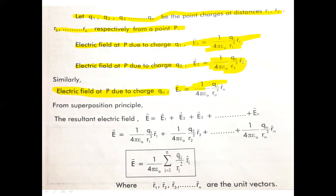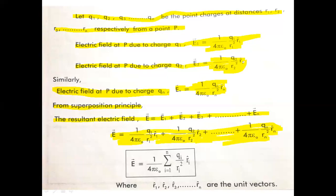The electric field at P due to the charge QN: EN equals 1 over 4πε₀ times QN divided by RN² times RN̂. Now applying the superposition principle, we take the vector sum to get the resultant electric field. The resultant electric field E equals E1 plus E2 plus E3 plus ... plus EN.